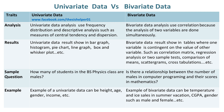Univariate Data results are shown in bar graphs, histograms, pie charts, line graphs, box and whisker plots, etc. Whereas, Bivariate Data results are shown in tables where one variable is contingent on the value of the other variable.